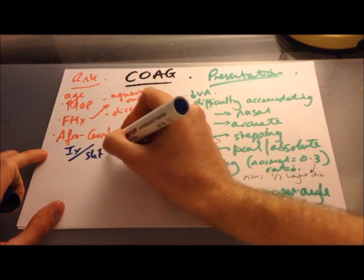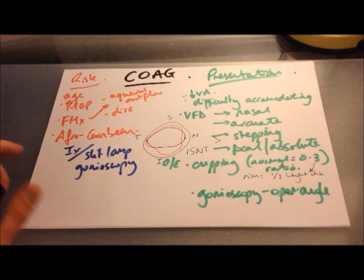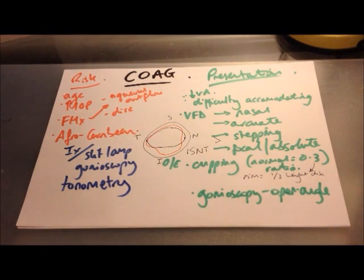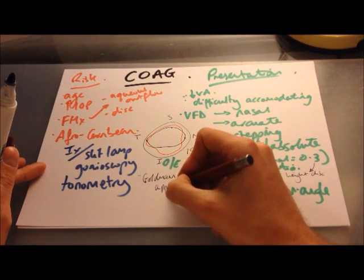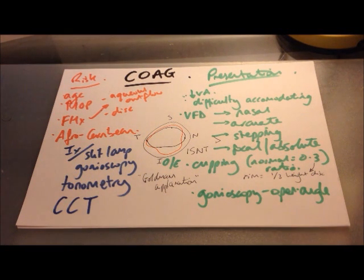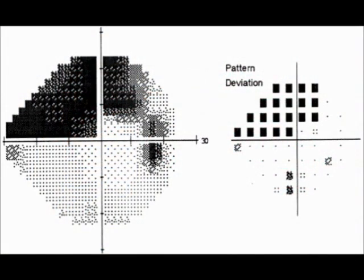Investigations include a full slit lamp exam with gonioscopy to look at the iridocorneal angle, and tonometry — usually with a Goldmann applanation tonometer — to measure intraocular pressure, along with central corneal thickness measurement. Thinner corneas give falsely low readings and thicker corneas give falsely high readings. Perimetry is used to evaluate the patient's visual fields; an example shows a superior arcuate defect with nasal stepping, where black spots represent the area of defect.